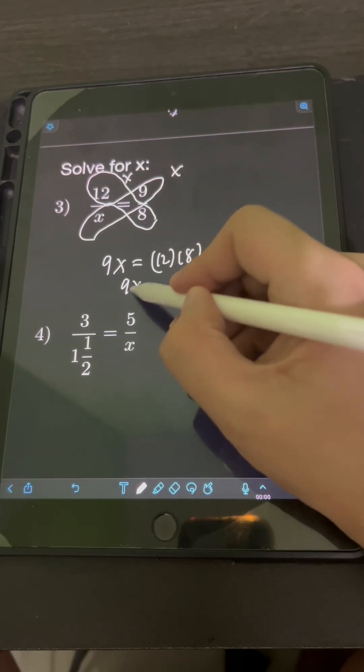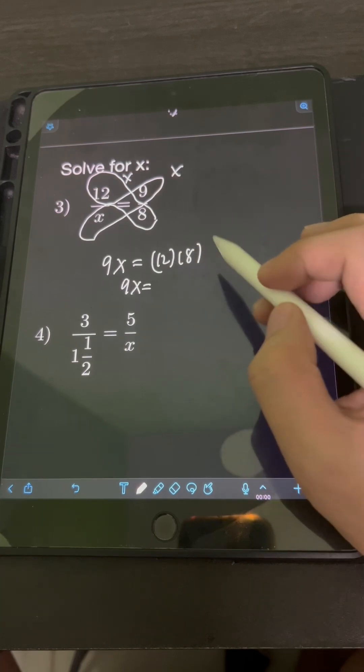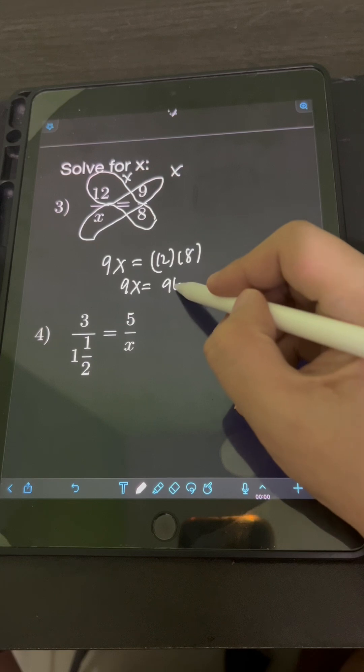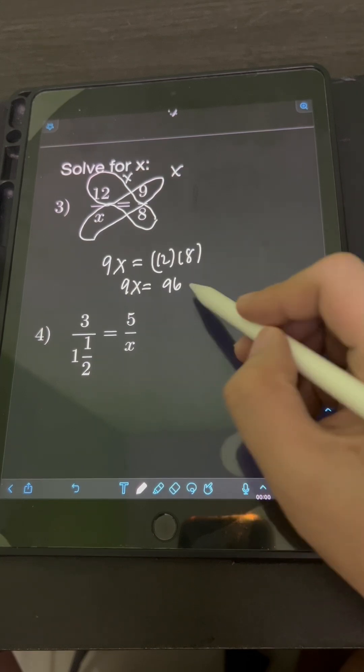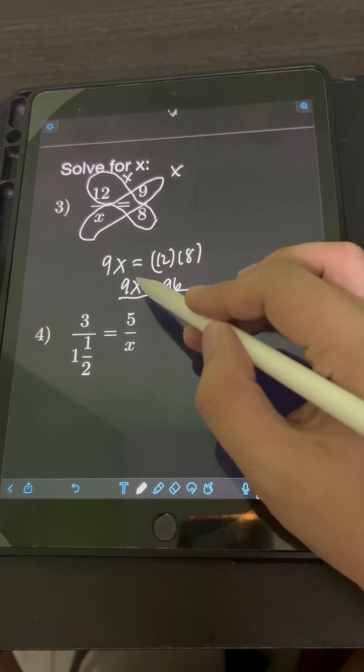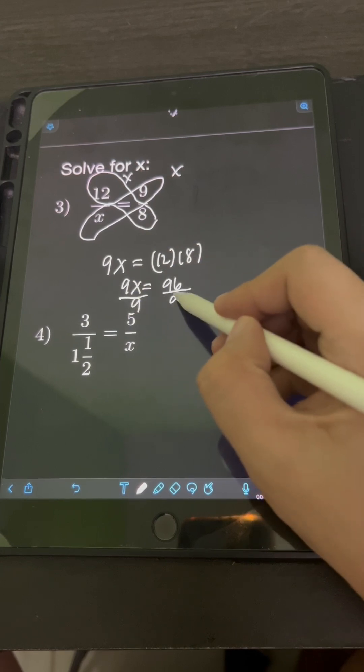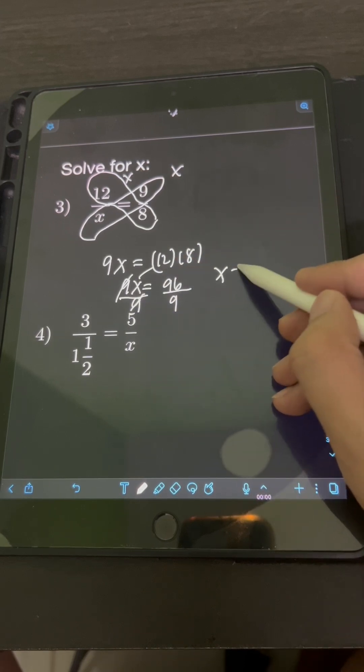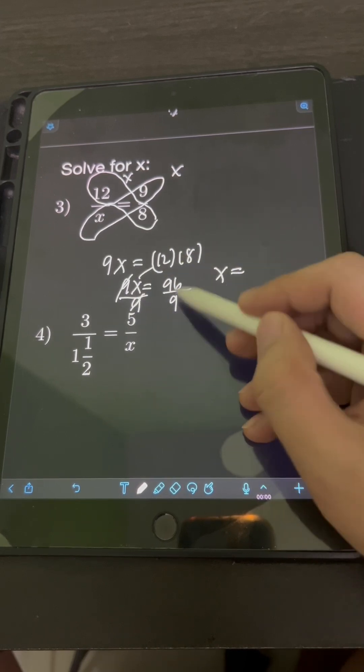So we have 9x is equal to 12 times 8. It's equal to 96. And then solving for x here, we divide both sides by the coefficient or the constant beside x, which is 9. So we can cancel out this 9. Therefore, x is equal to 96 over 9.